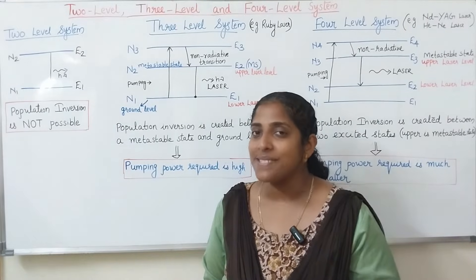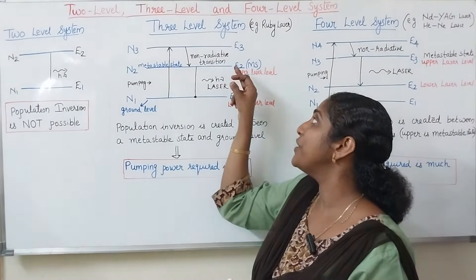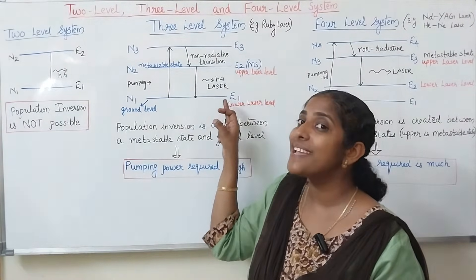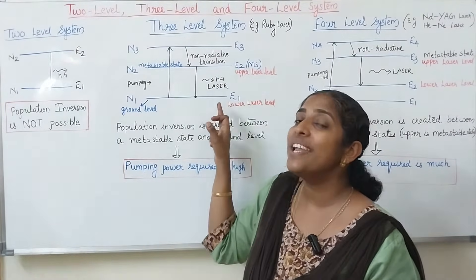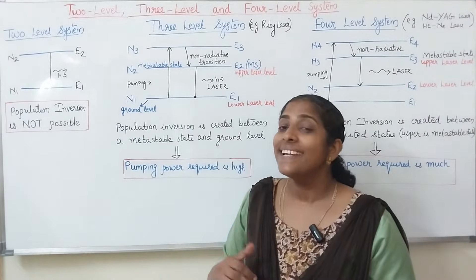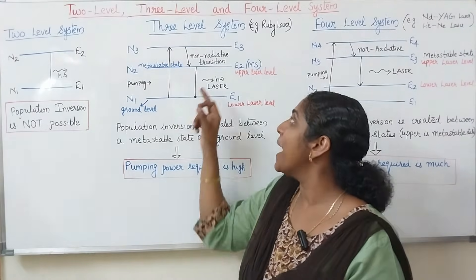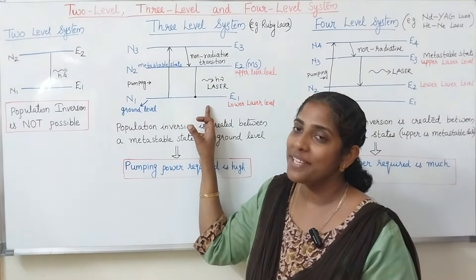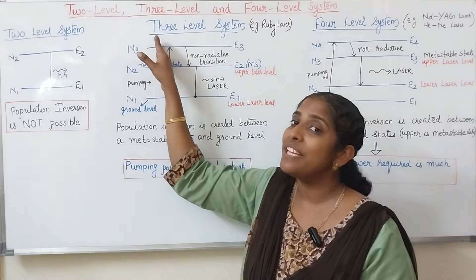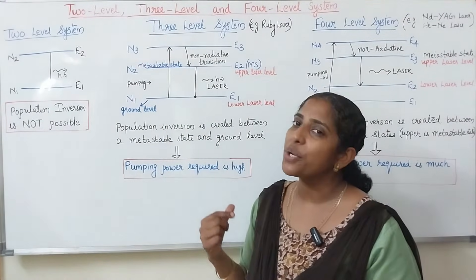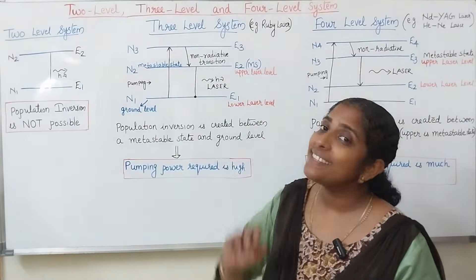In the 3 level system, we get the laser beam due to stimulated emission of radiation between the metastable state and the ground level. The upper laser level is the metastable state E2 and the lower laser level is the ground level. Population inversion is achieved between the metastable state and the ground level, so around 50% of the ground level atoms have to be raised to level E3. Therefore, the pumping power required is high in the 3 level laser system. Ruby laser is an example of a 3 level system.